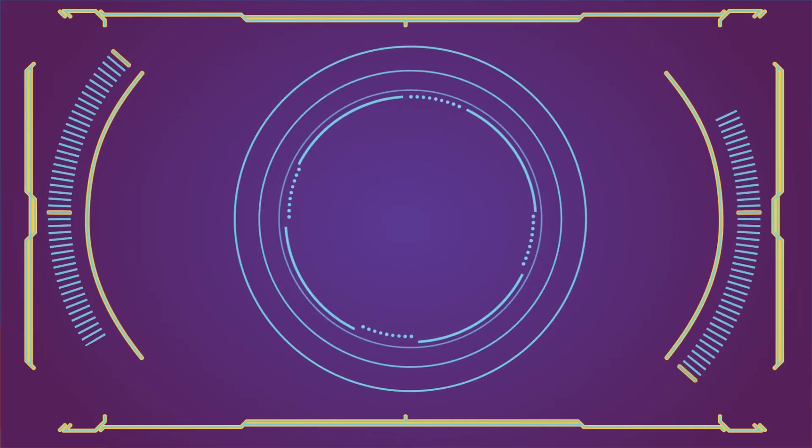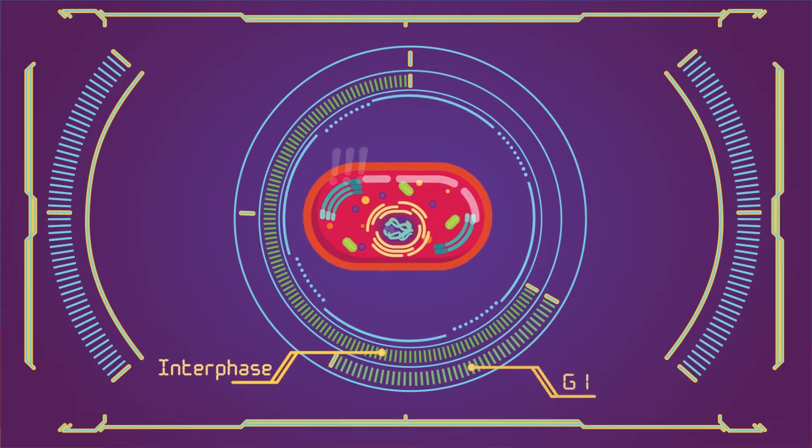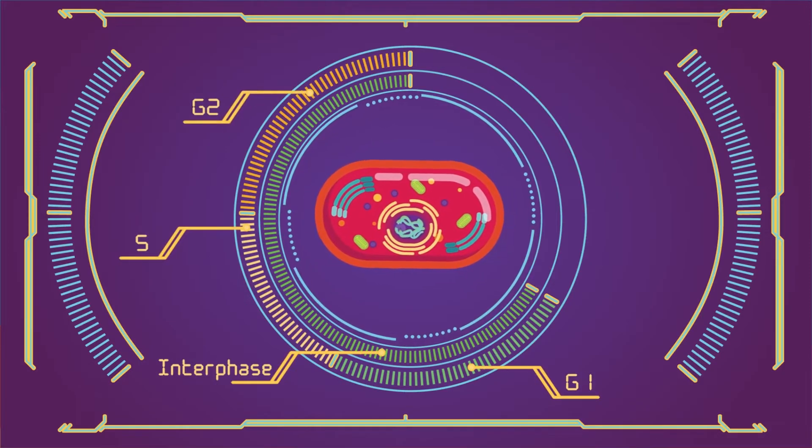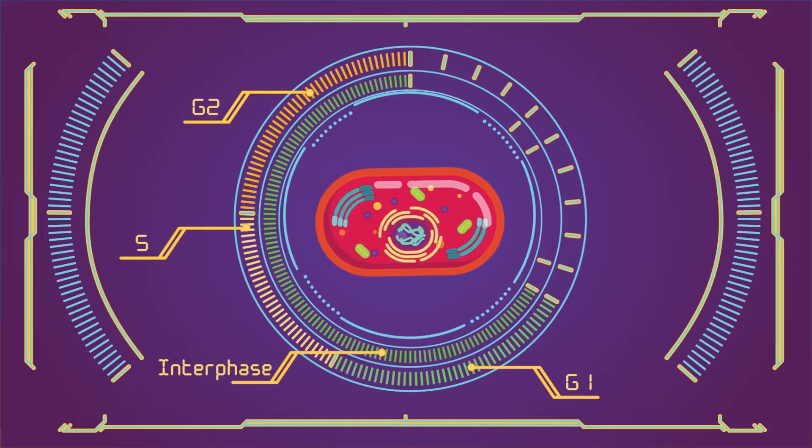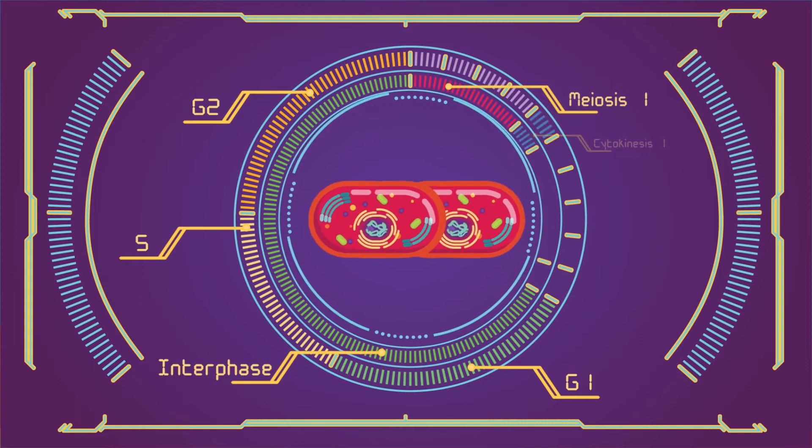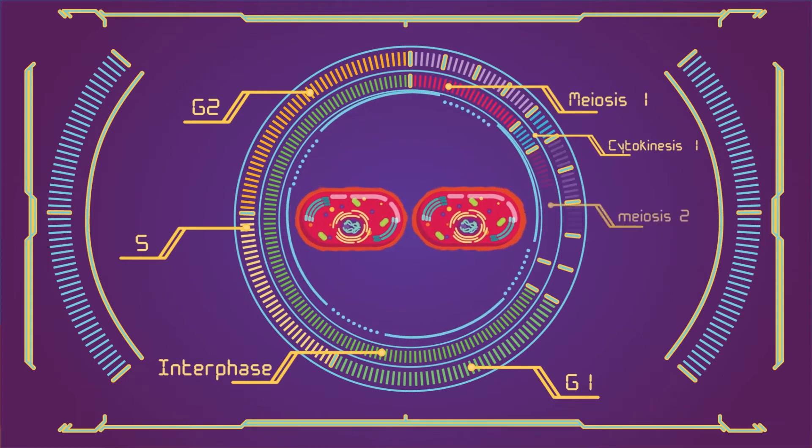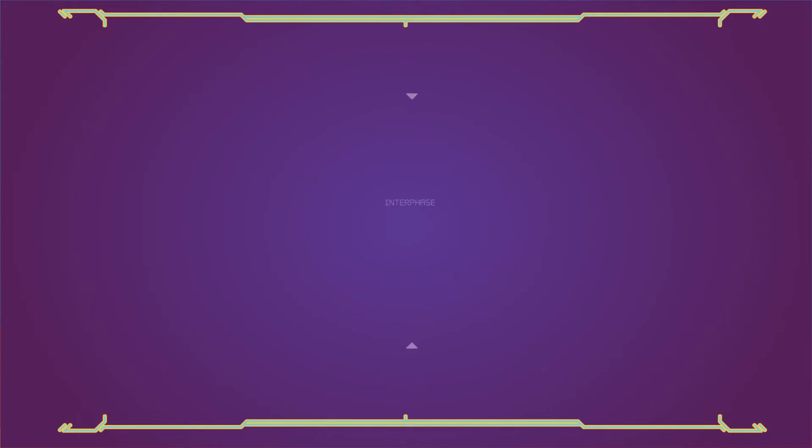Similar to mitosis, cells also pass through the interphase, G1, S and G2 phase before they enter meiosis. Here are the distinct phases of meiosis: Interphase, Meiosis 1, Cytokinesis 1, Meiosis 2, Cytokinesis 2.